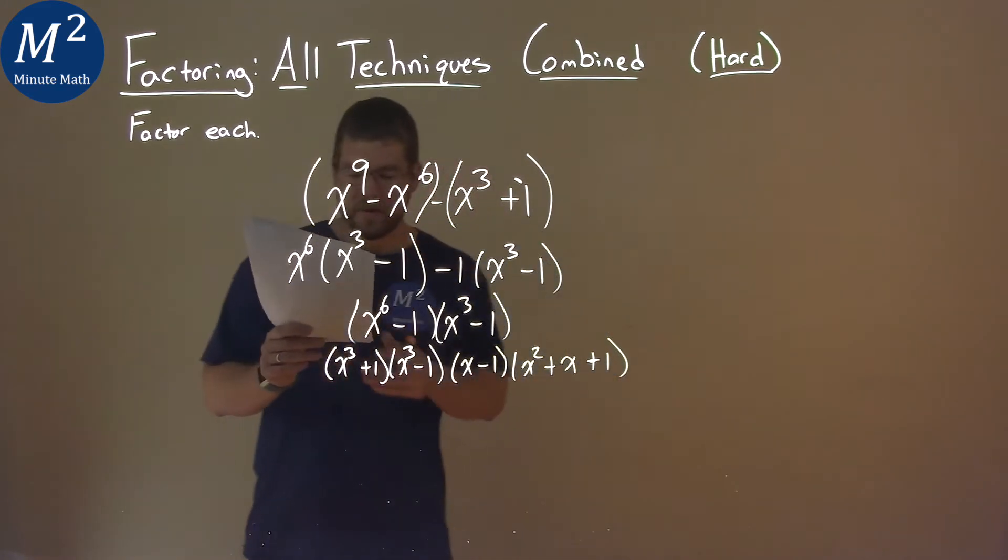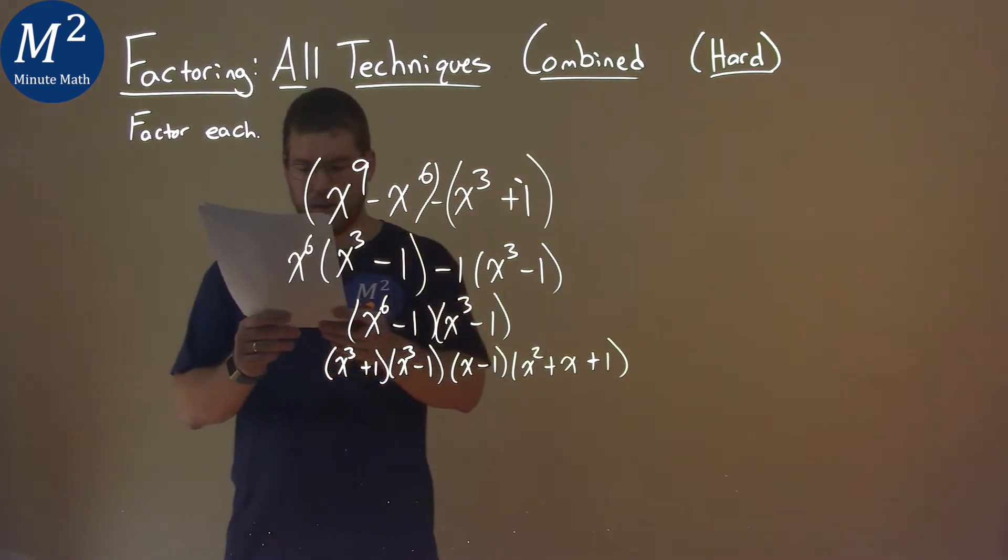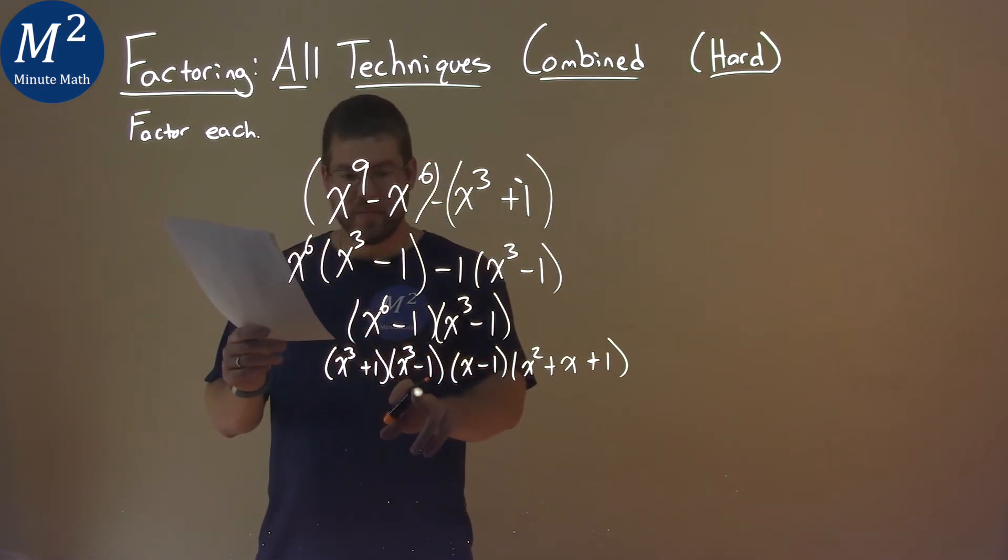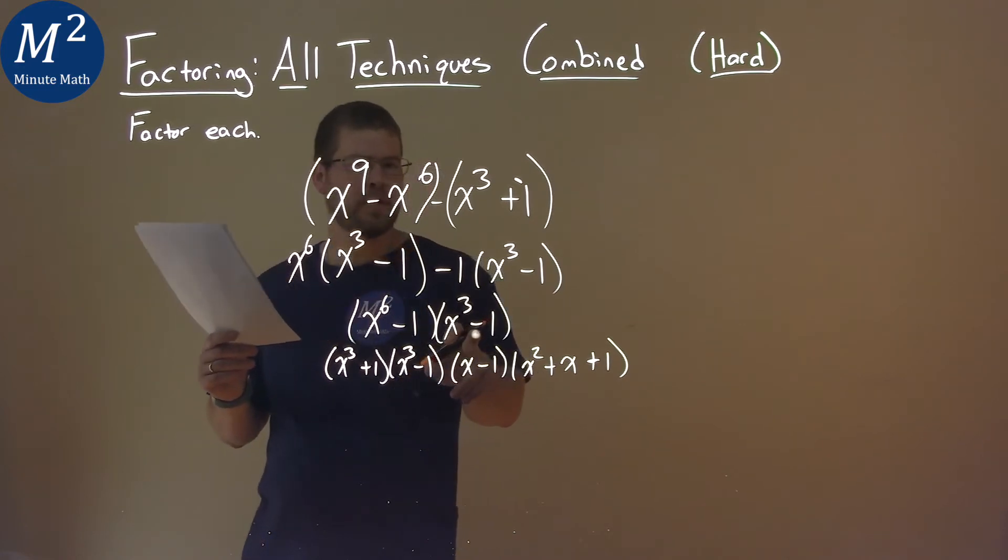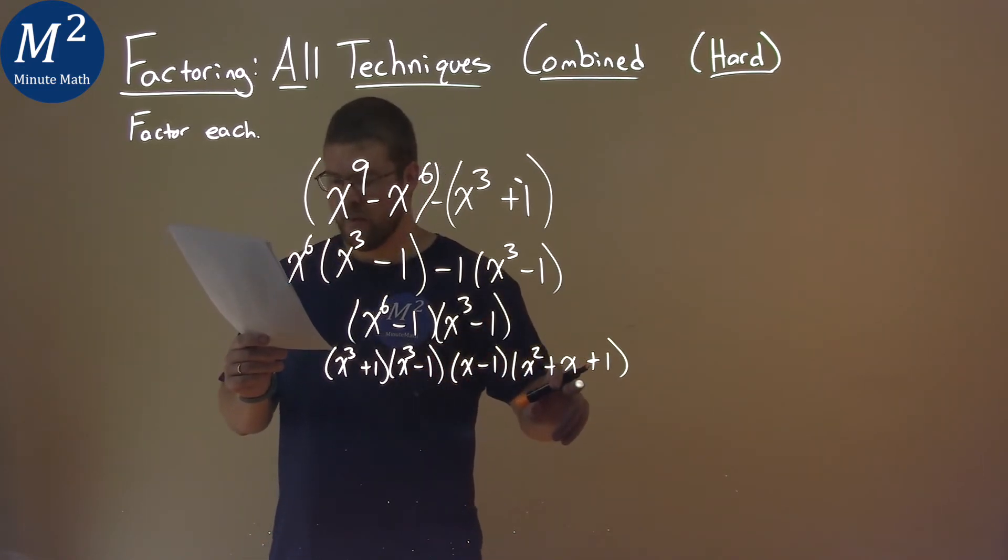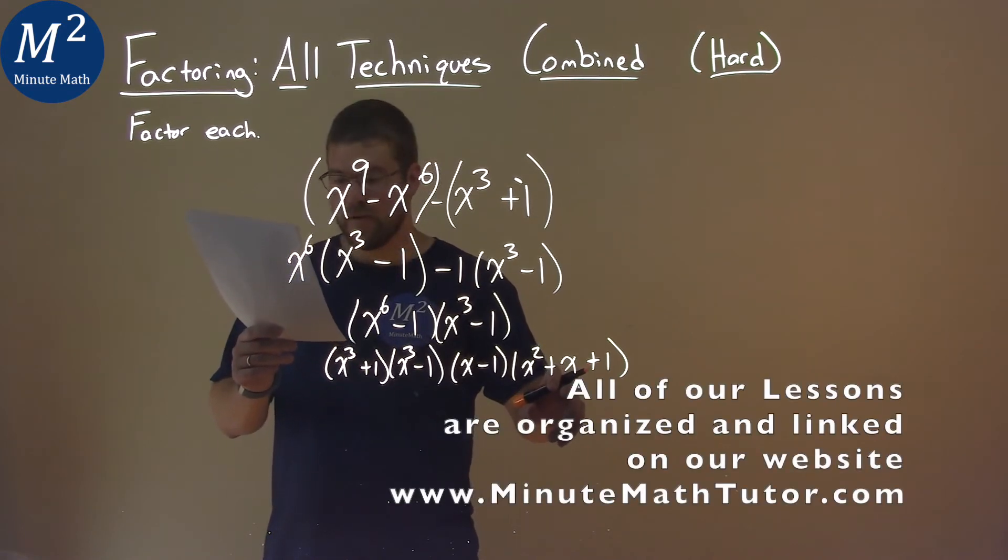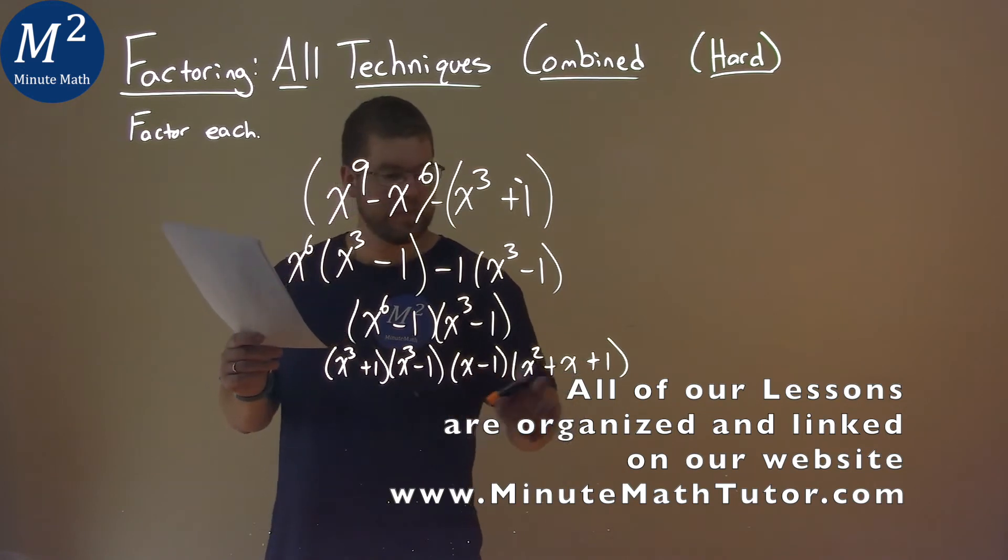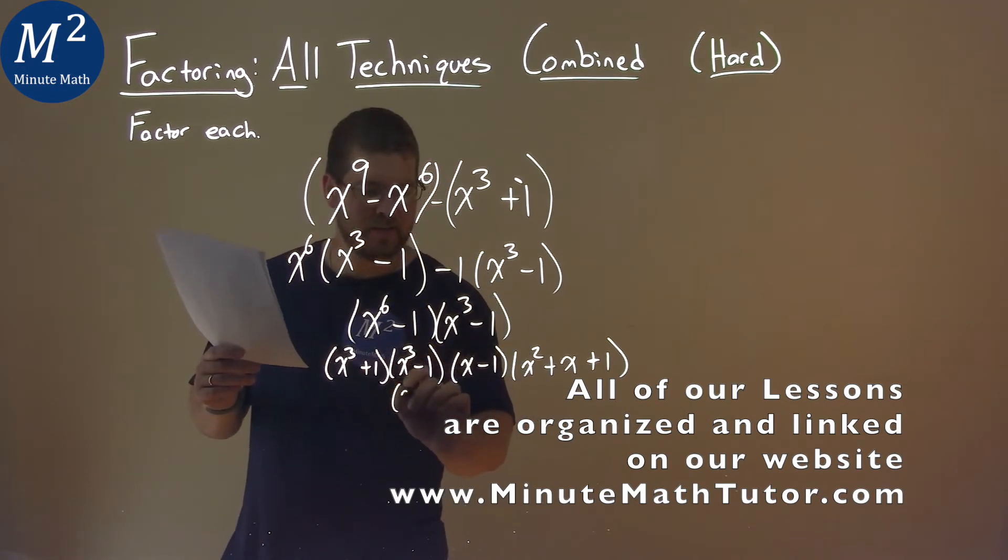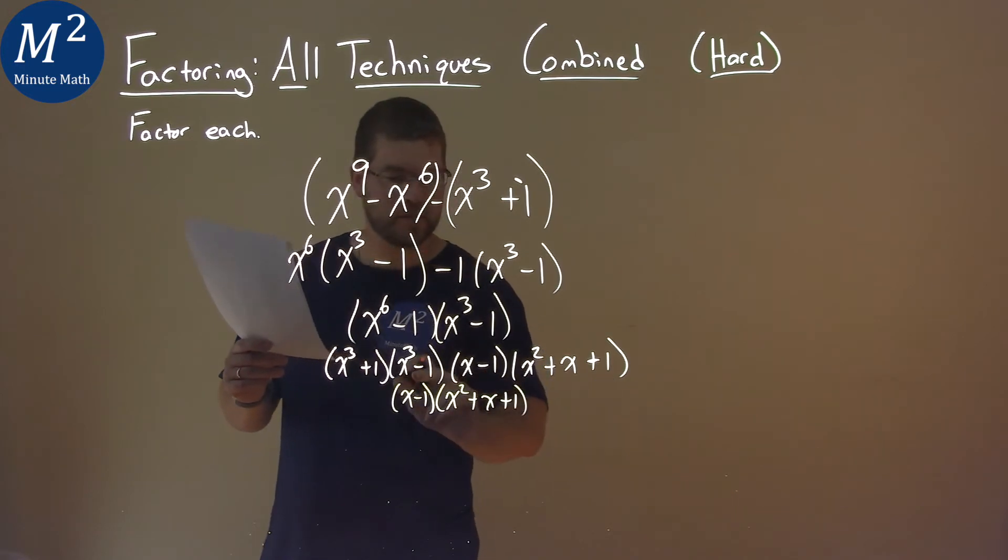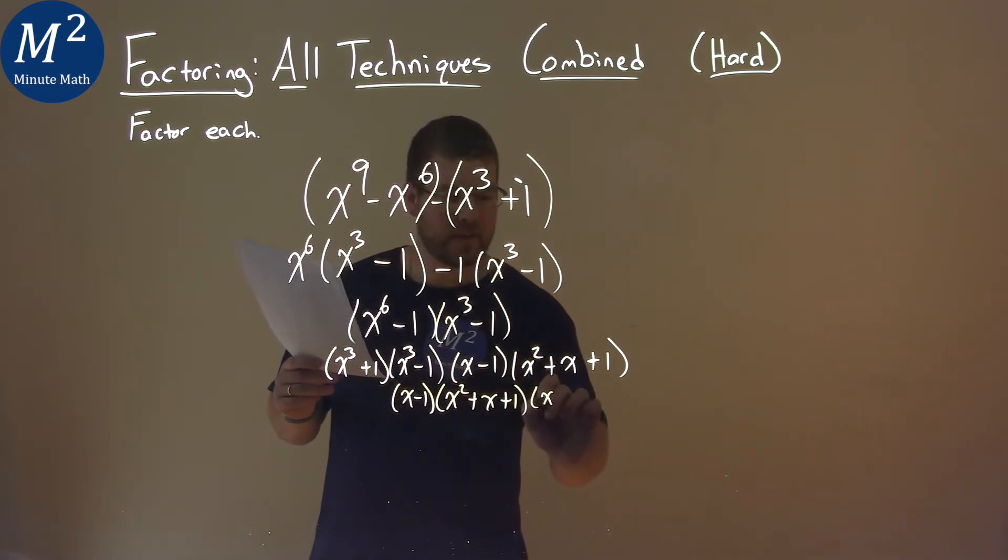And so going down, we can simplify this a little more here. Anything else we can really break down here and, oh, look at that. We use x to the third minus one and we just found the difference of cubes here. We can actually do that again a second time, because it's the same thing. So let's go break that down. So this one right here is an x minus one times an x squared plus x plus one we just found. Then we have an x minus one and an x squared plus x plus one.